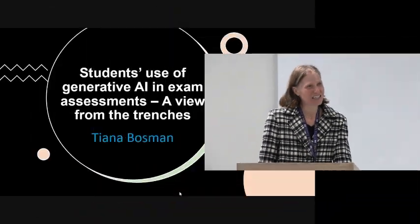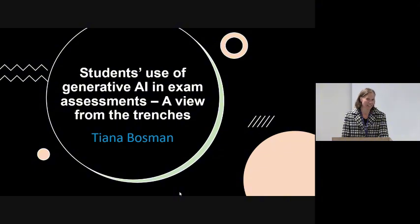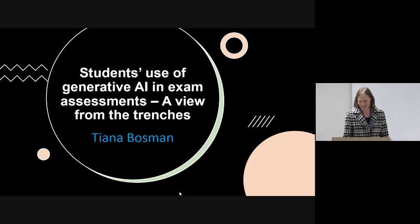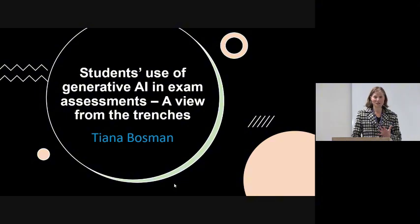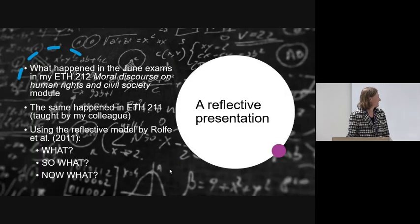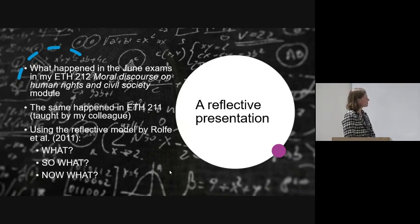I'm here to share a reflective exercise — my own reflection on what went wrong for us. I'm a lecturer in Ethics 212: Moral Discourse on Human Rights and Civil Society. My colleague, Professor Swart, is the lecturer for the other ethics module we taught in the first semester. The same thing happened in both, and the irony that it happened in ethics does not escape us. I'm going to tell you what happened using the model by Rolfe et al — what happened, so what, and now what.